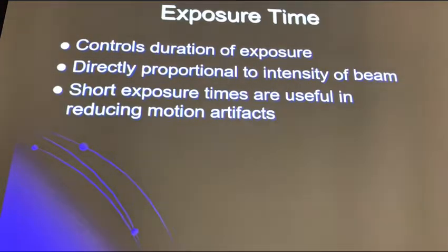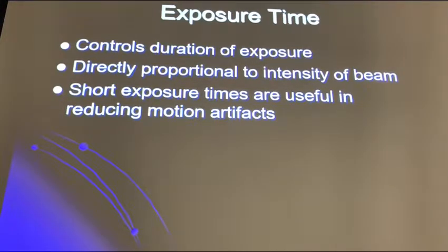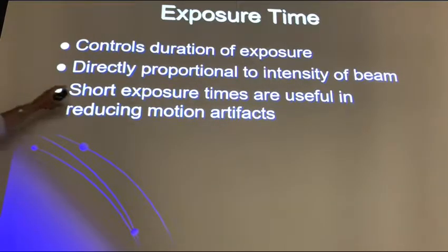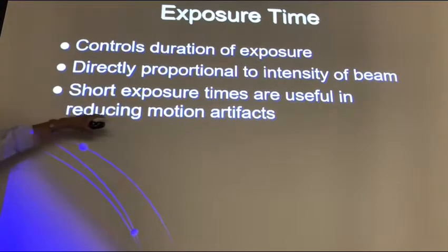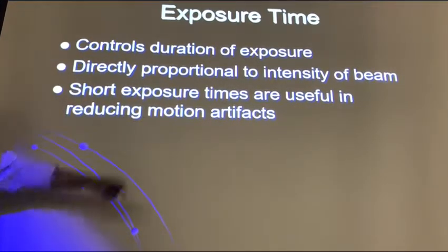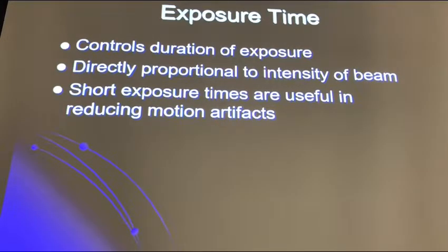Exposure time controls the duration of the exposure — for how long you allow the electrons in the electron cloud to flow from cathode to anode. It is directly proportional to the intensity of the beam. Short exposure times are useful for reducing motion artifacts — for example, when imaging a child or baby, it's recommended to use a high MA station and a very short time.